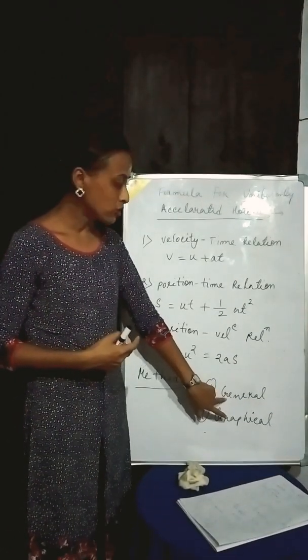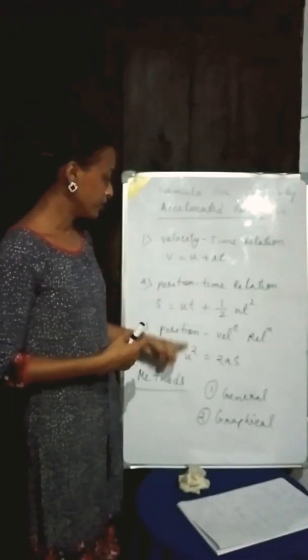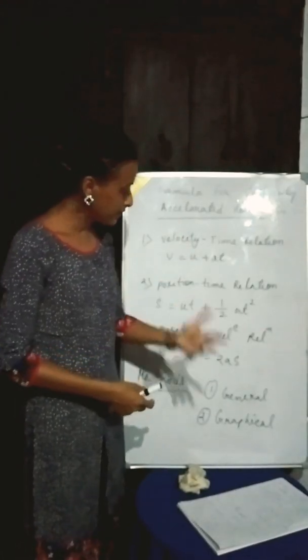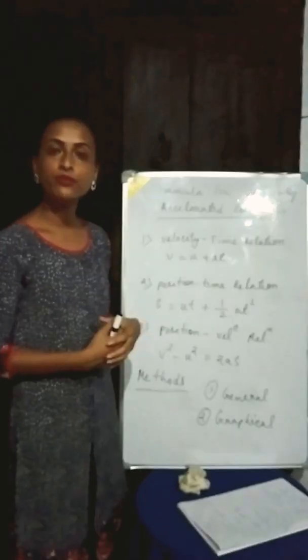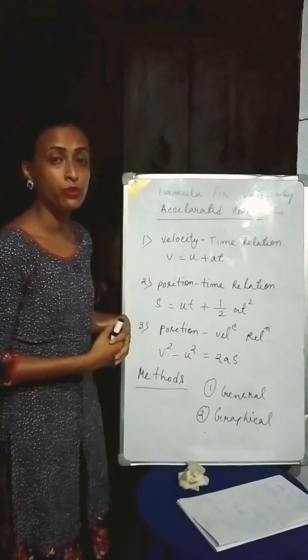I am going to use the first method, that means general method, in order to derive this formula. And then next, I will use graphical method in order to derive the same three formulas of uniformly accelerated motion.